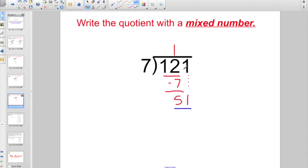7 times what gets me close to 51? In that case, the answer is going to be 7. 7 times 7 multiplied back is going to give us 49. And 51 minus 49 is going to leave us with 2. So, 2 is the remainder, so it is the new numerator. 7 is the divisor, so that's my denominator. 17 and 2/7 if I write it as a mixed number.